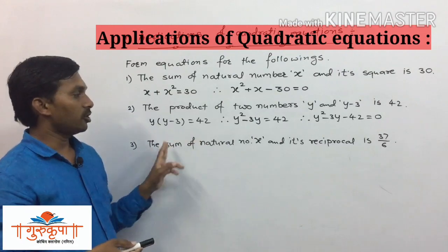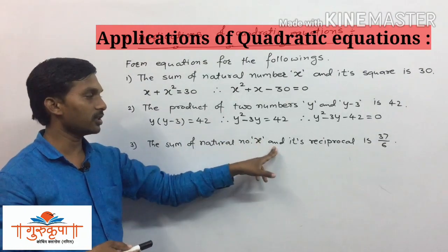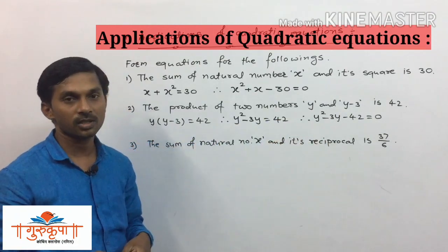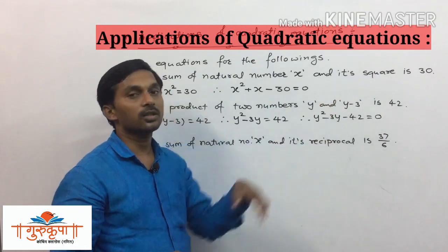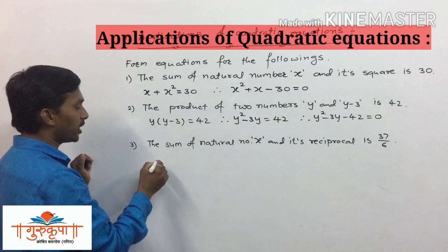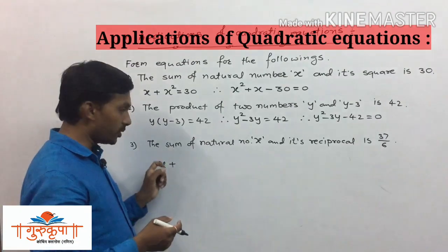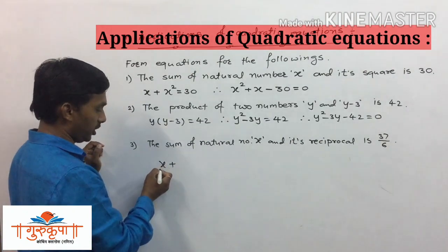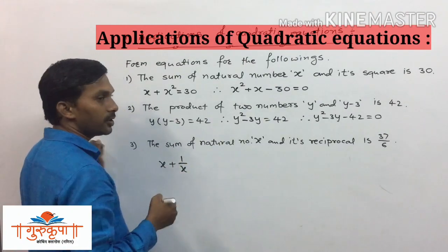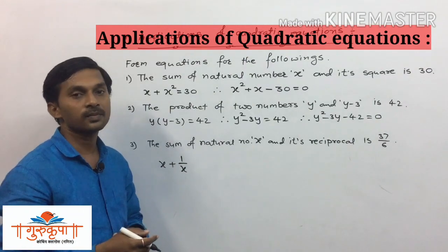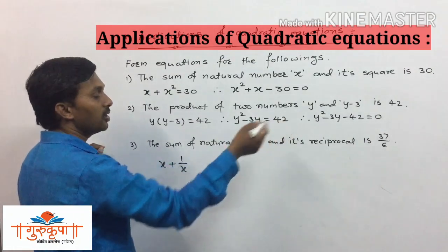Third condition: the sum of a natural number x and its reciprocal is 37/6. The reciprocal of x is 1/x — obtained by interchanging numerator and denominator. So we write x + 1/x = 37/6.